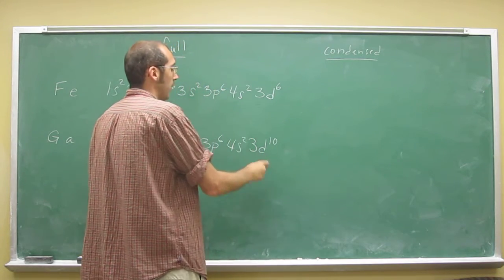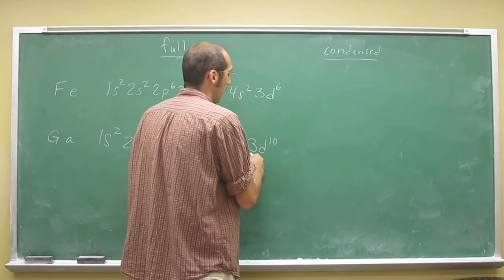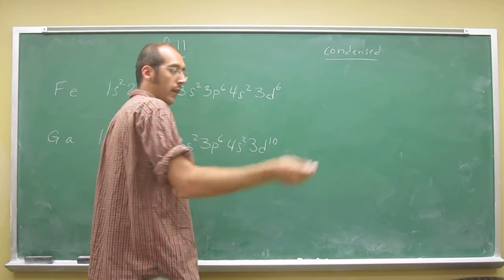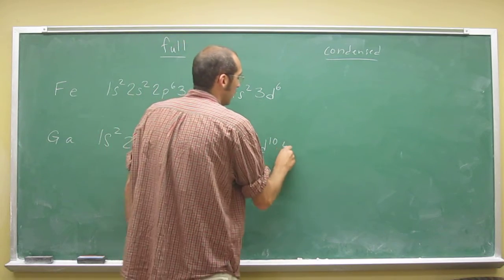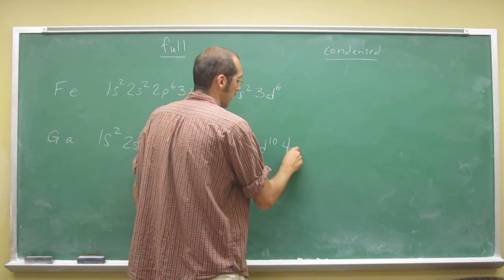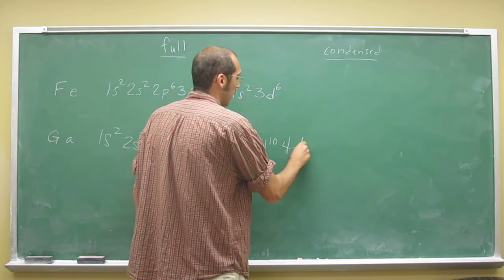So that gets filled after the 4s electrons. And there's five orbitals, so they can hold 10 electrons. And then you go back to fill in the n equals 4 orbitals: 4p1.